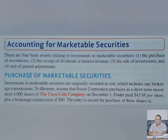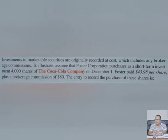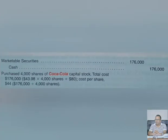The entry for purchase is: Marketable Securities debit and Cash credit. The amount given will include the purchase price plus any commission paid — you add the commission to get the total amount. Marketable Securities is an asset, and since it is increasing, you debit it.